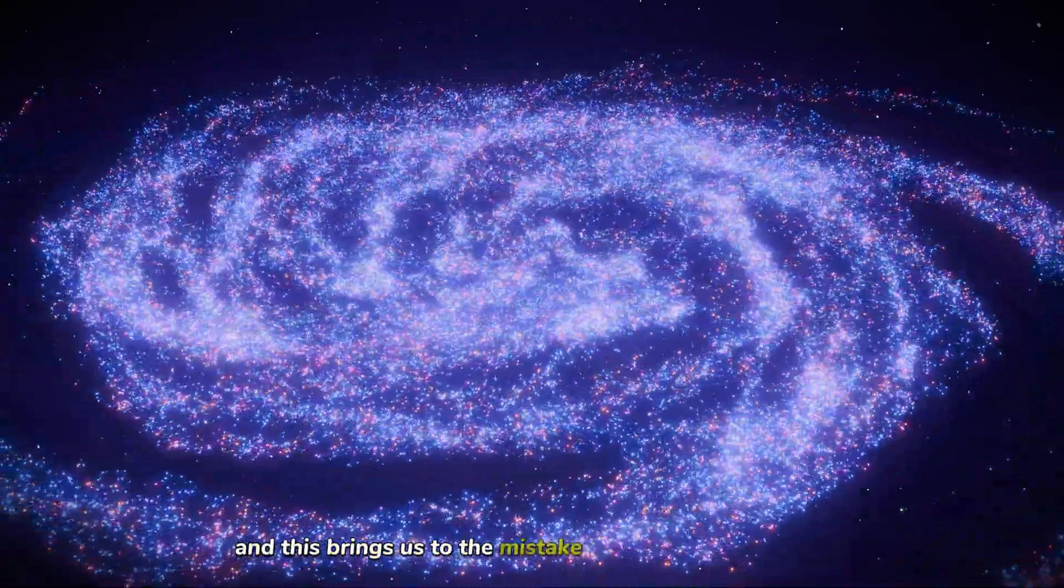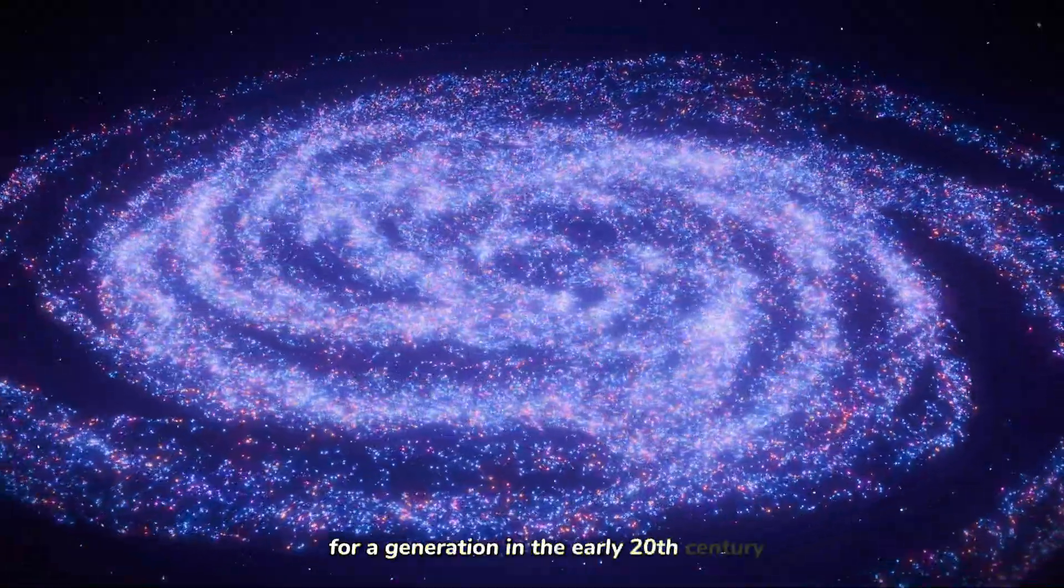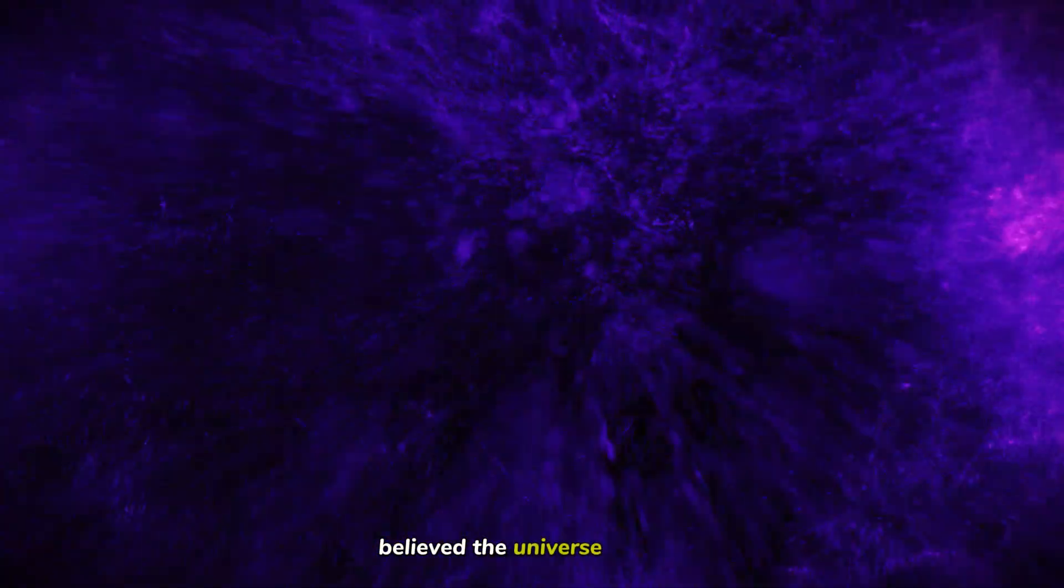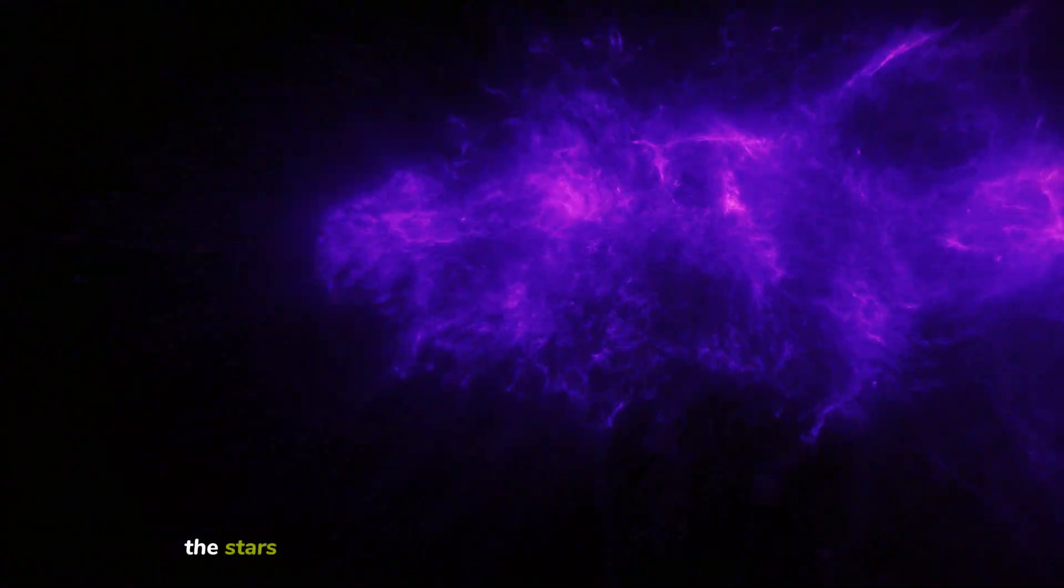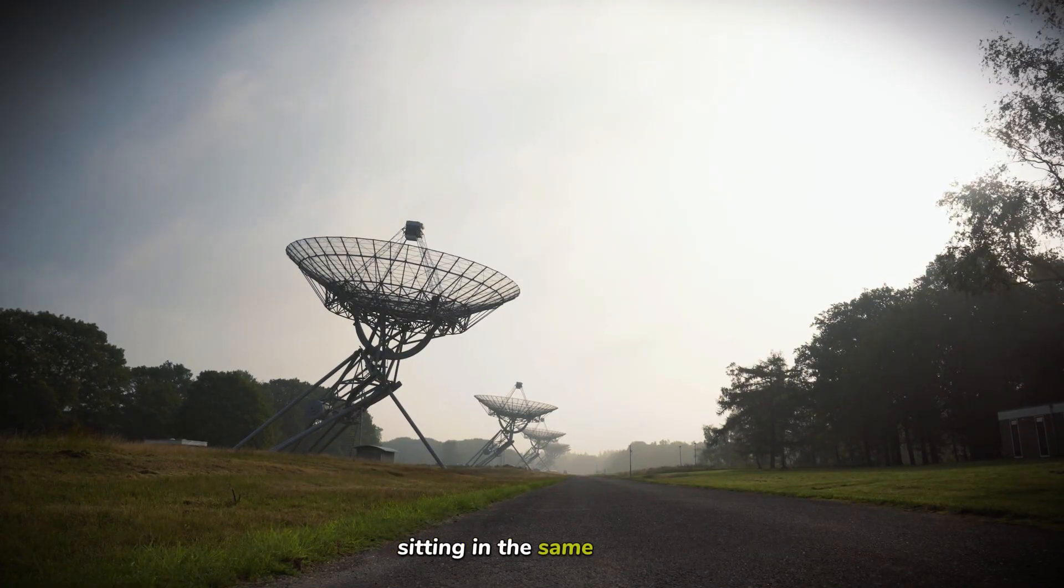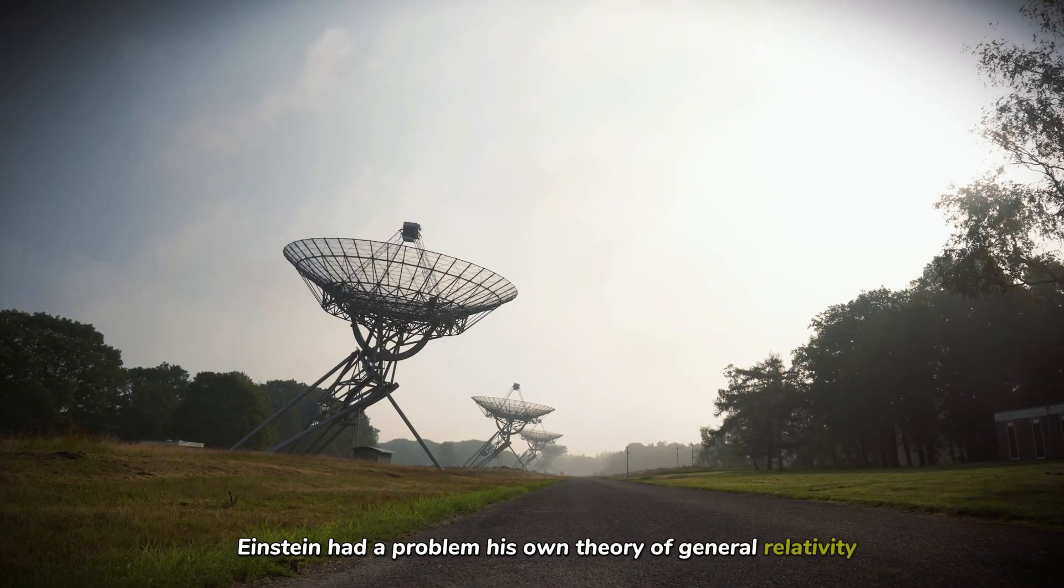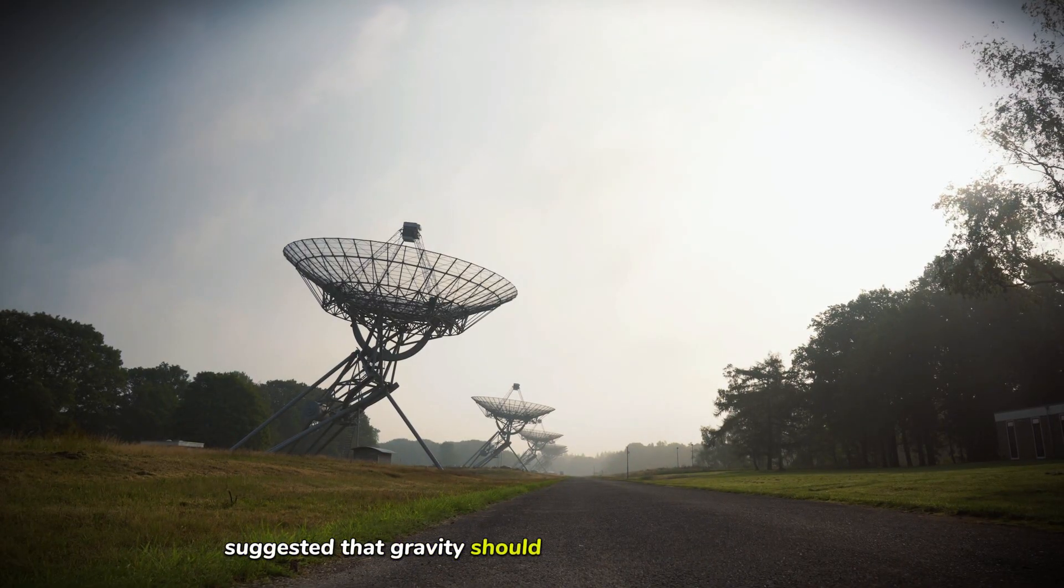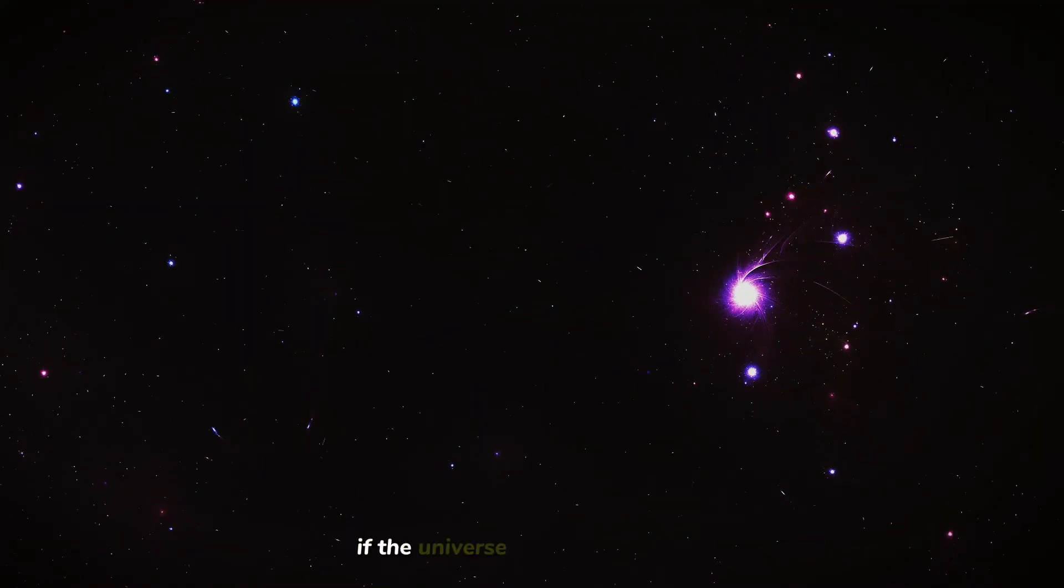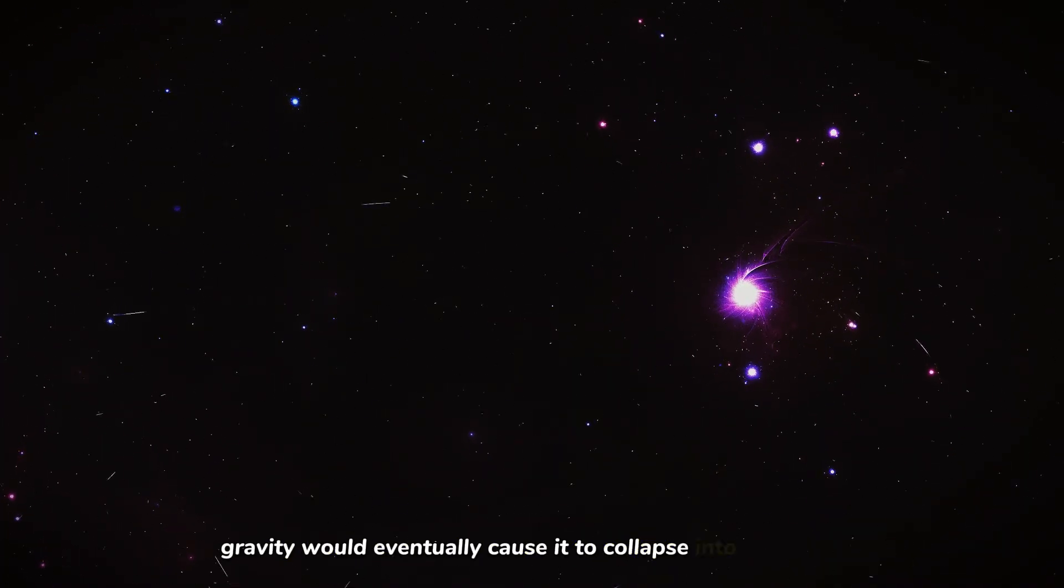And this brings us to the mistake that held back astronomy for a generation. In the early 20th century, even the greatest minds, including Albert Einstein, believed the universe was static. They thought the stars you see today are the same stars that were there yesterday, sitting in the same positions. But Einstein had a problem. His own theory of general relativity suggested that gravity should be pulling everything together. If the universe was just sitting there, gravity would eventually cause it to collapse into a big crunch.